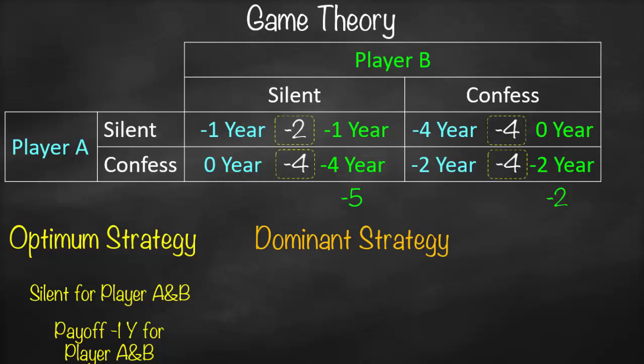Now for player A: if player A stays silent regardless of what player B does, summing horizontally gives negative one plus negative four, which is negative five. If player A confesses regardless of what player B does, summing the blue values horizontally gives zero plus negative two, which is negative two. For both players, negative two is bigger than negative five, meaning spending two years is better than spending five years — losing two years of freedom is better than losing five.